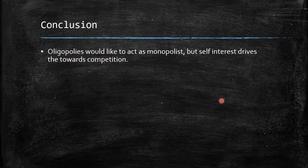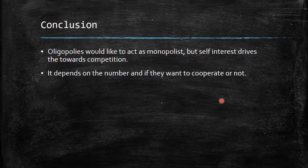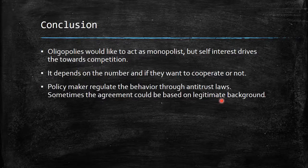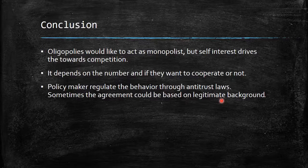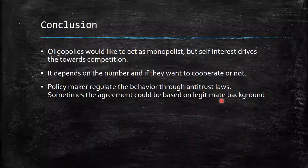In conclusion, oligopolies would ideally act as monopolists, but self-interest drives them toward competition. Cooperation leads to better results for the players — though not necessarily for society — but most of the time self-interest leads to an outcome closer to competition, with firms having strong incentives to deviate. Policy makers regulate behavior through antitrust laws, but agreements sometimes have legitimate backgrounds and must be carefully analyzed before intervention. That's all for today — feel free to comment; I'm here sharing my point of view to help build better knowledge. Have a great day, bye bye.